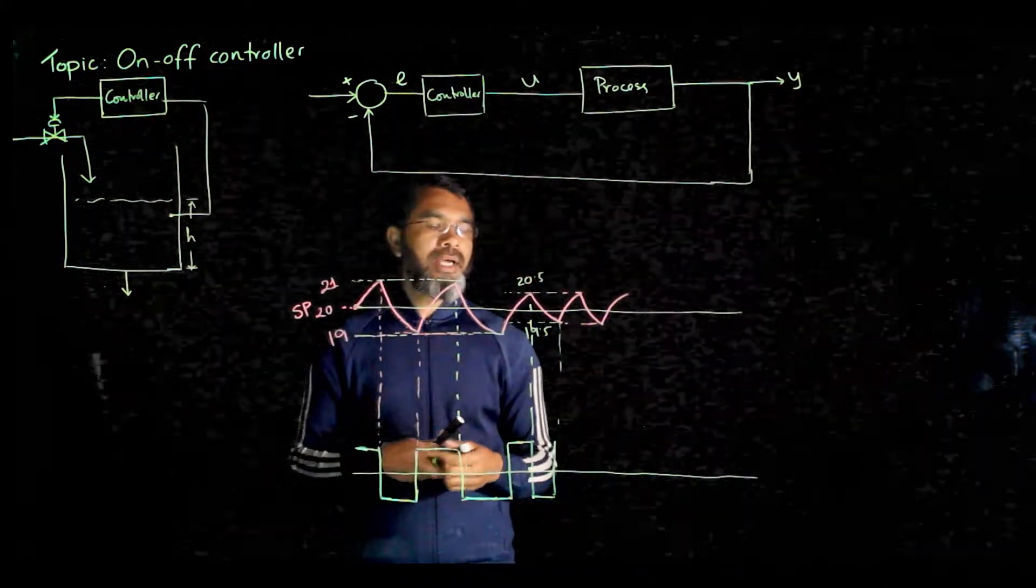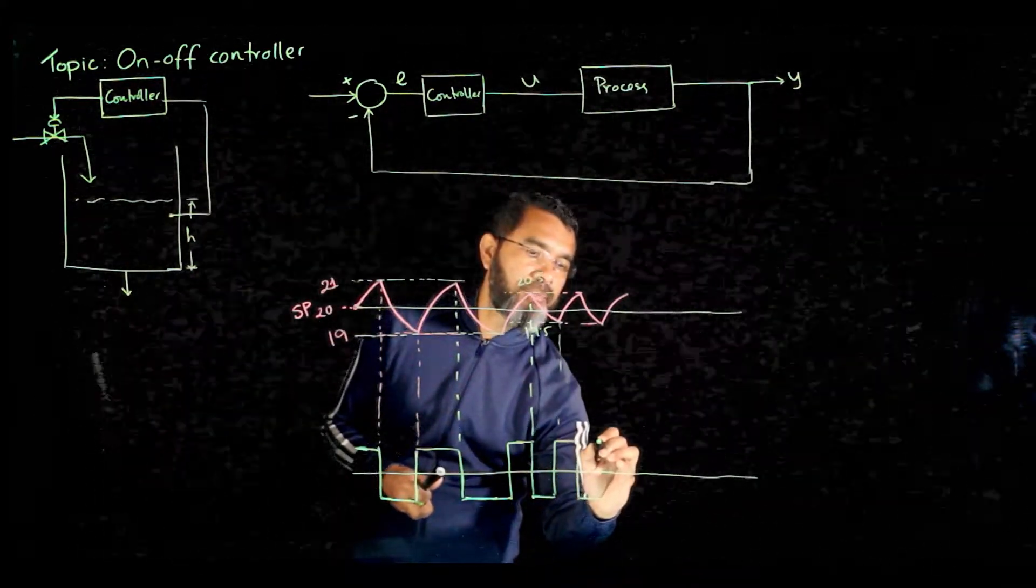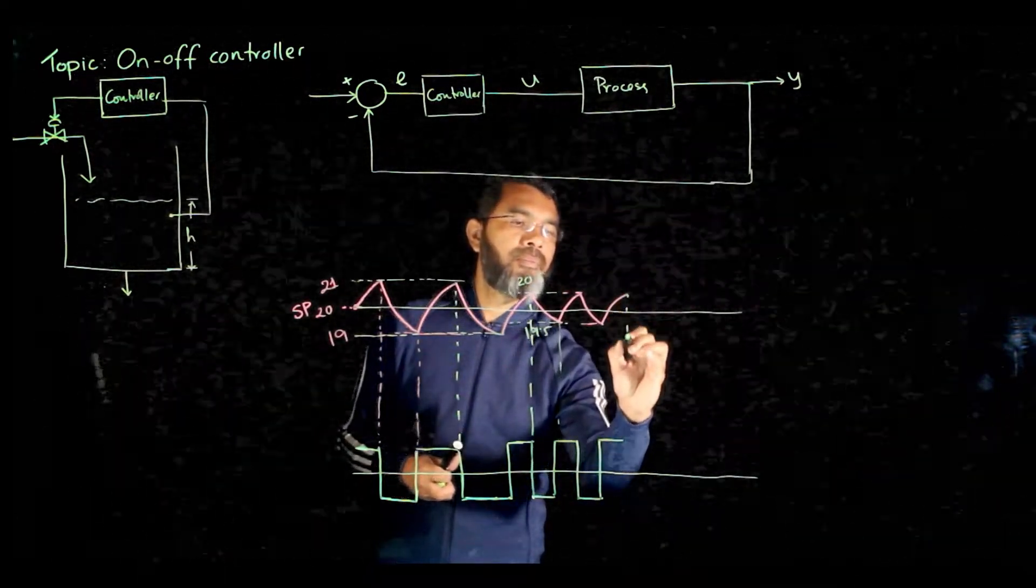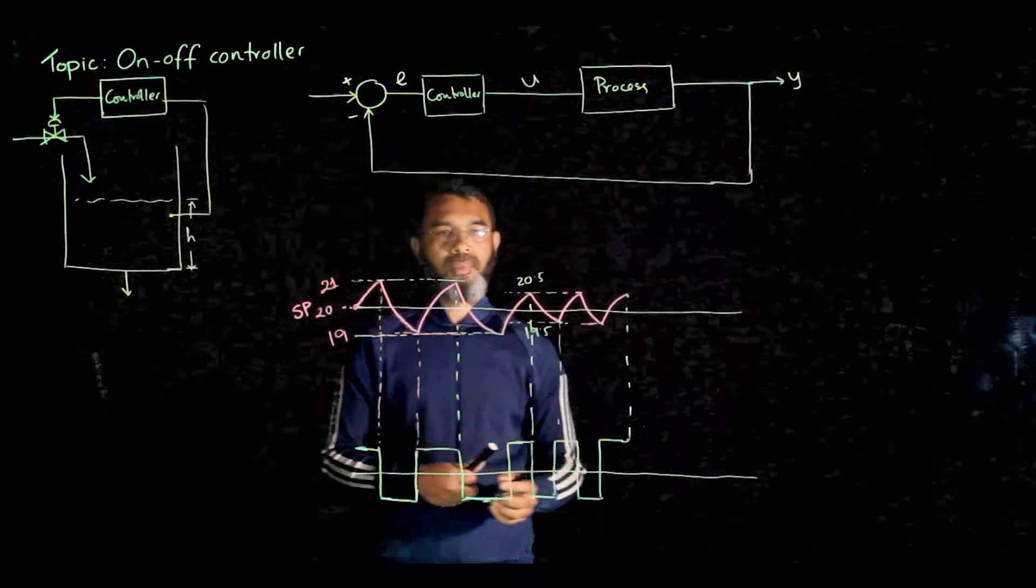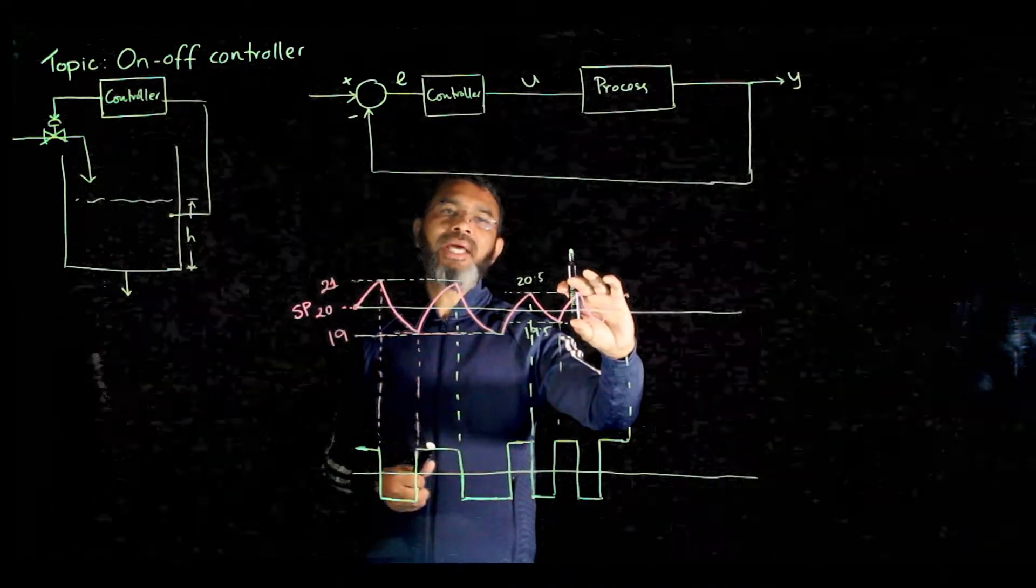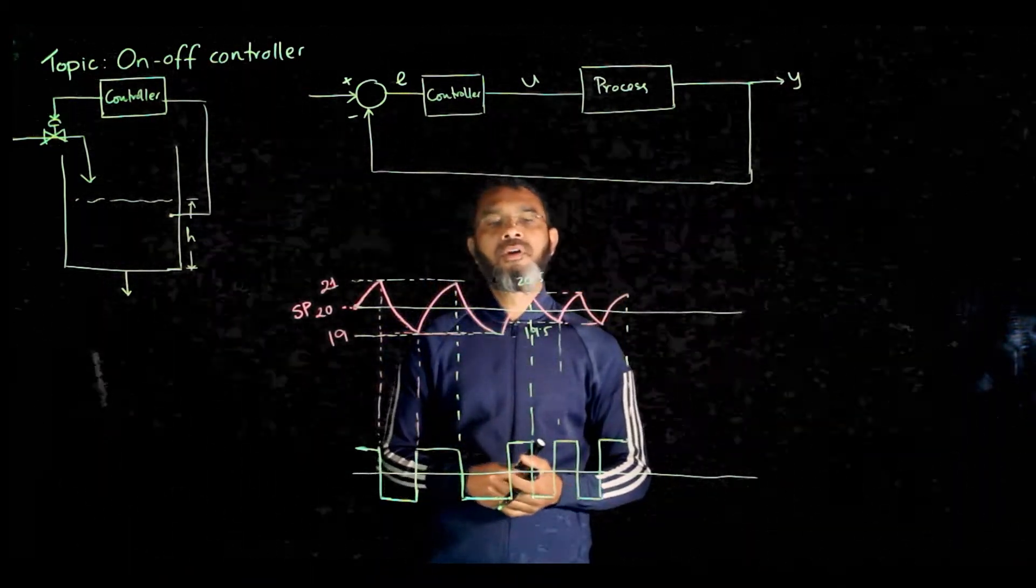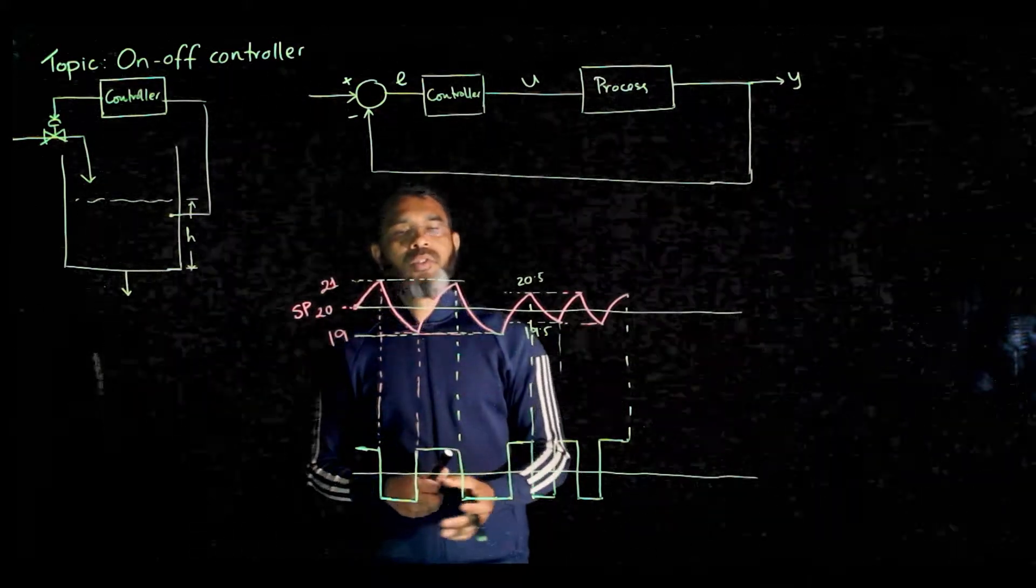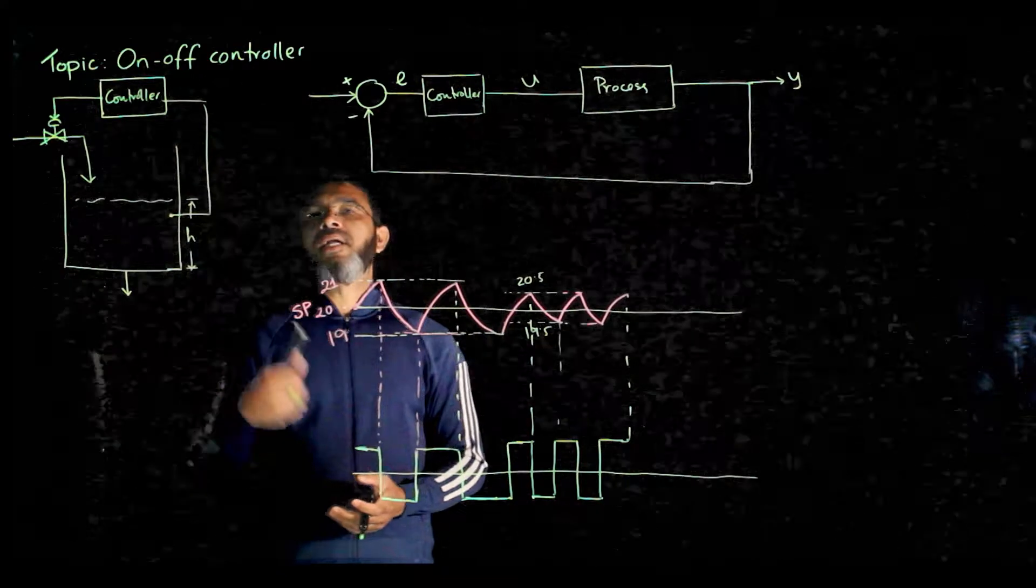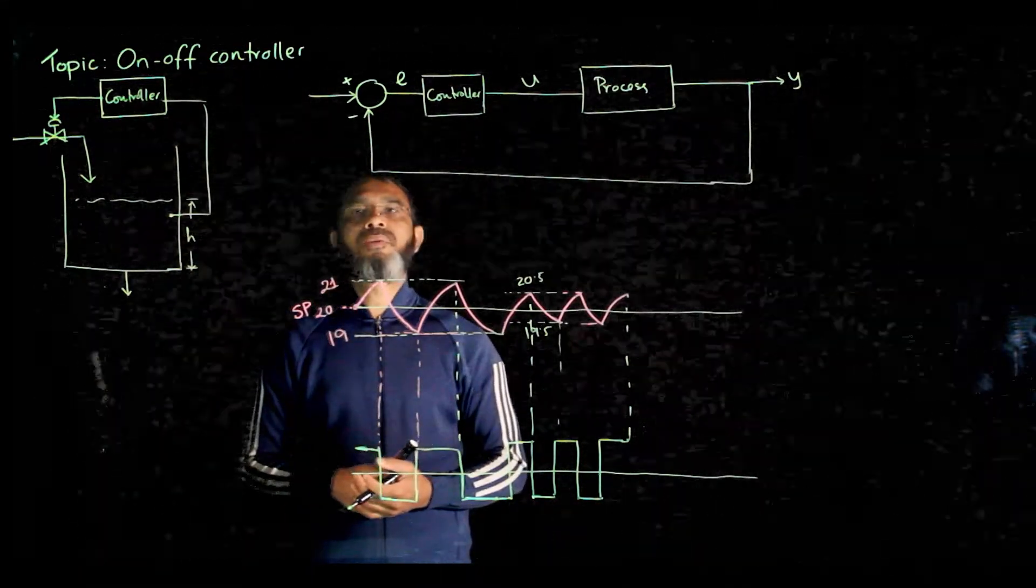But what will happen? The frequency of this valve turning on and off will be more. So if you want this level to maintain within this narrow band, the valve will turn on and off more frequently. What is the problem with that? Turning on and off the valve very frequently will cause mechanical wear and tear of the final control element.